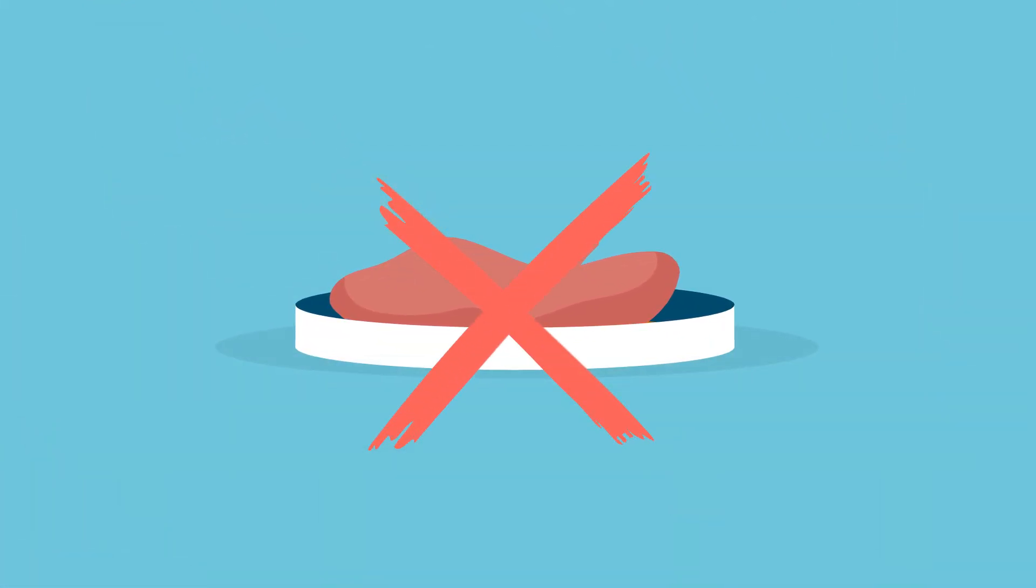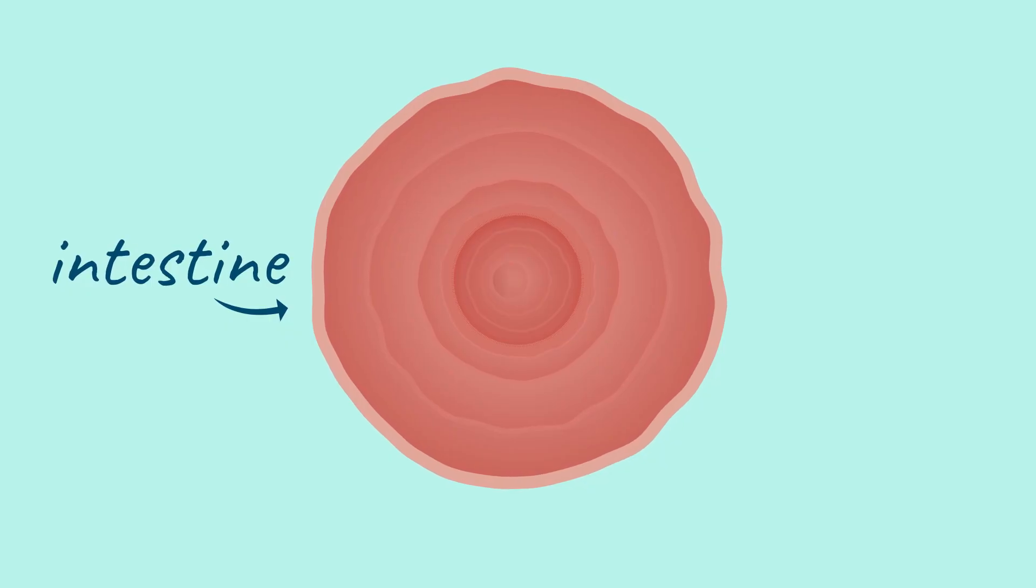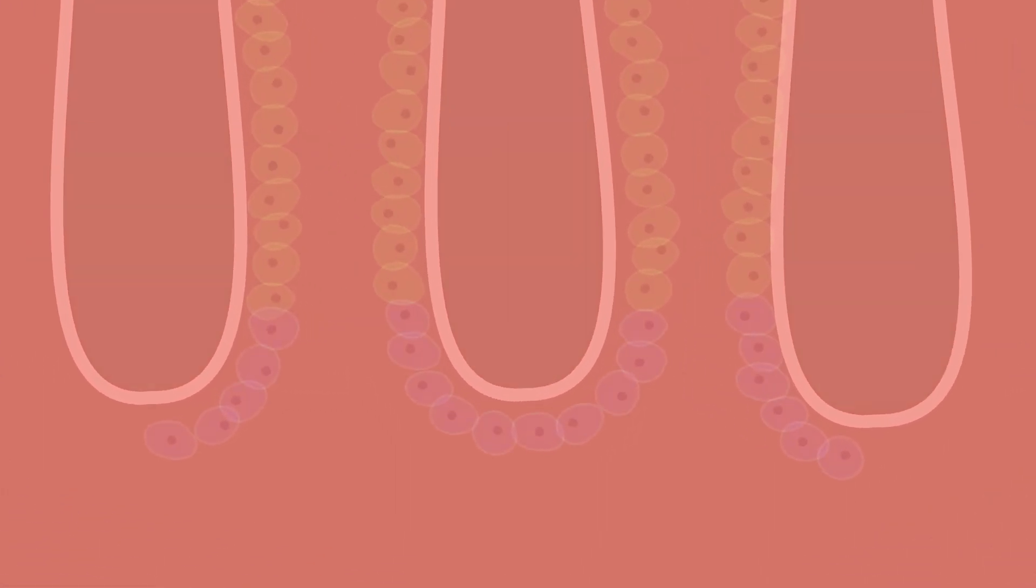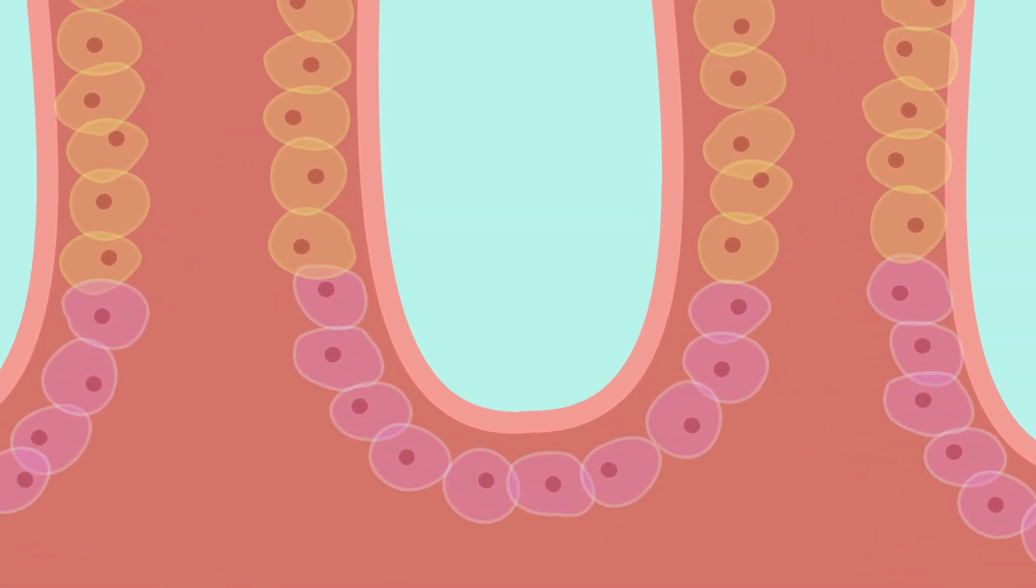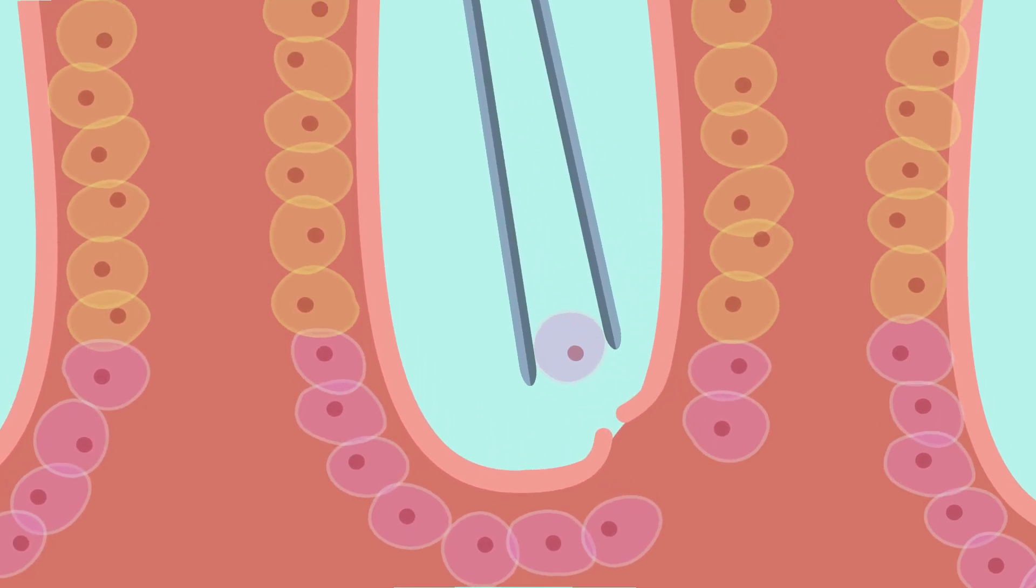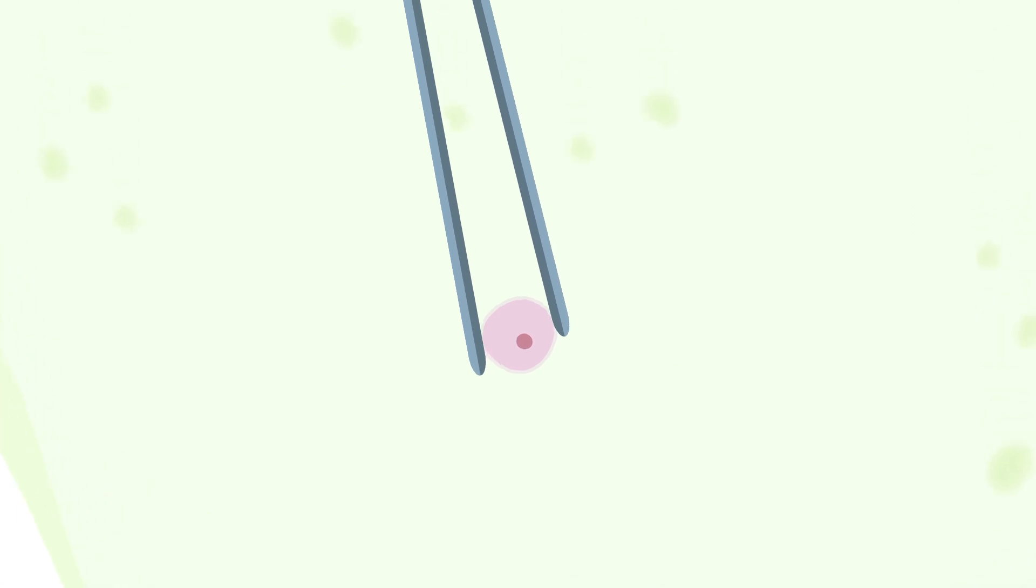Organoids don't look like organs at all. Organoids are very small pieces of tissue that grow from animal stem cells taken from, for example, the intestine, liver or lung. Here at Wageningen University and Research, they grow these organoids in a small plate in a laboratory.